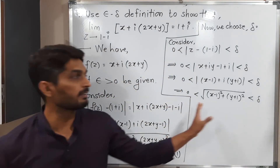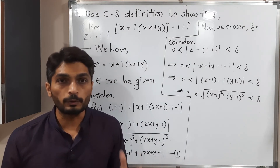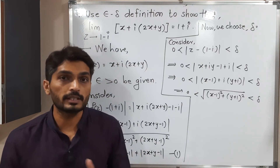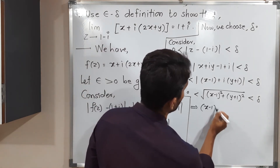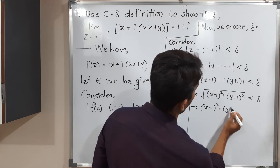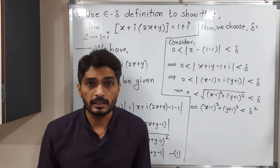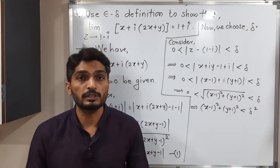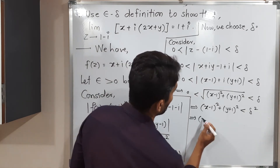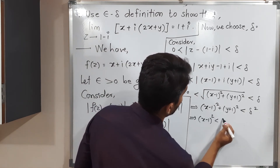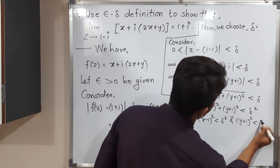To remove the square root, we take the square of both sides: x minus 1 squared plus y plus 1 squared less than delta squared. Since we are adding two squares whose sum is less than delta squared, each of them is less than delta squared. So x minus 1 squared less than delta squared and y plus 1 squared less than delta squared. Taking positive square roots: mod x minus 1 less than delta and mod y plus 1 less than delta.